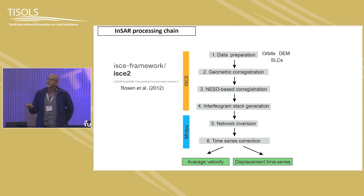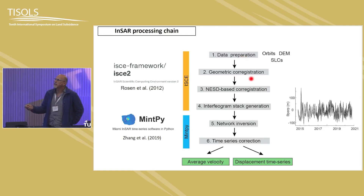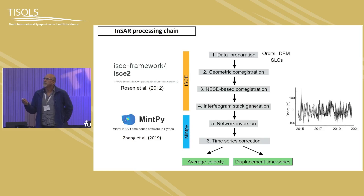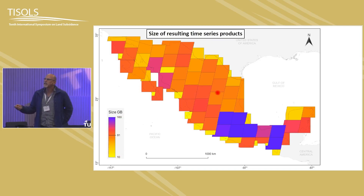The processing packages used are ISCE and MintPy. The network uses many short temporal baseline pairs with very high coherence. The number of scenes used varies from only about 10 scenes in some areas up to 160 scenes in Mexico City — a lot of data.